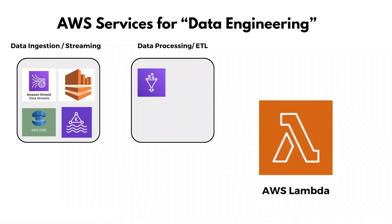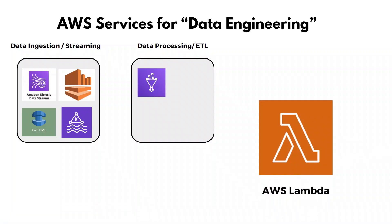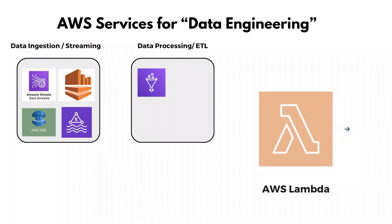The next service is AWS Lambda, which is also a managed service. Lambda is used to write quick processing logic and get your code running. Lambda is completely serverless, so you don't need to set up any servers. You can write your code in Python, Java, or many other languages supported by AWS Lambda. It is one of the most commonly used processing and ETL tools.